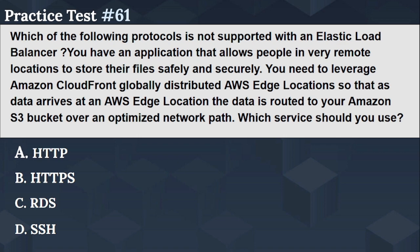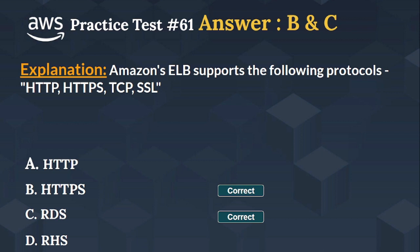The right answer is Options C and D — RDS and SSH. Amazon's ELB supports the following protocols: HTTP, HTTPS, TCP, and SSL. Let's move to the next question.